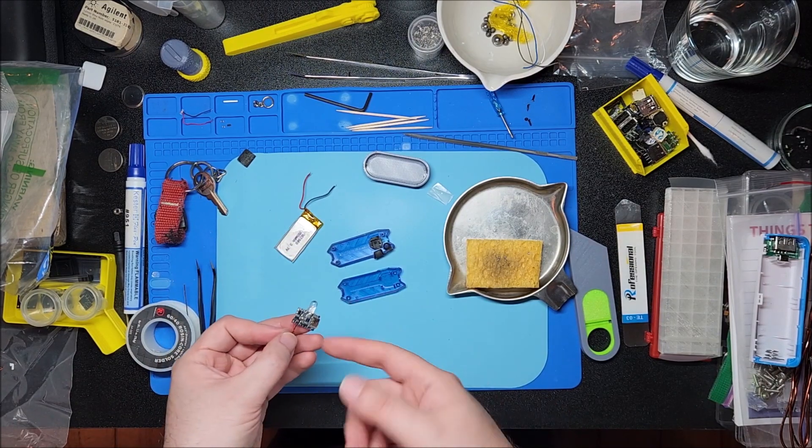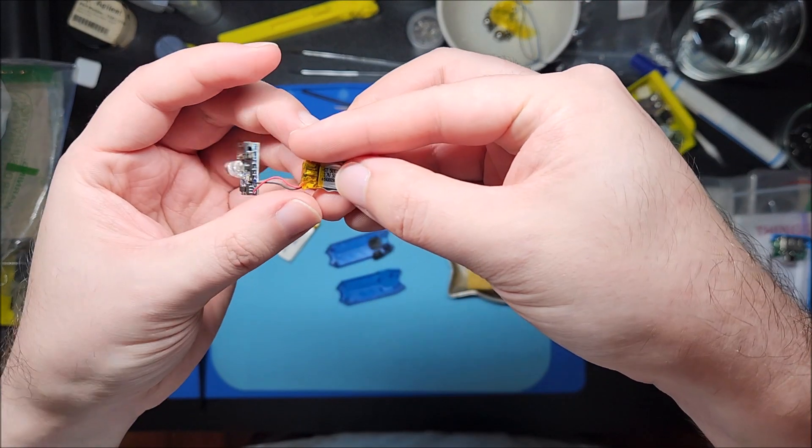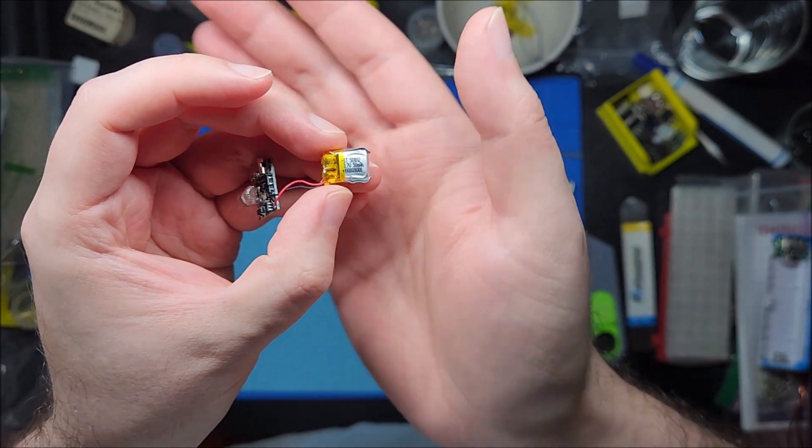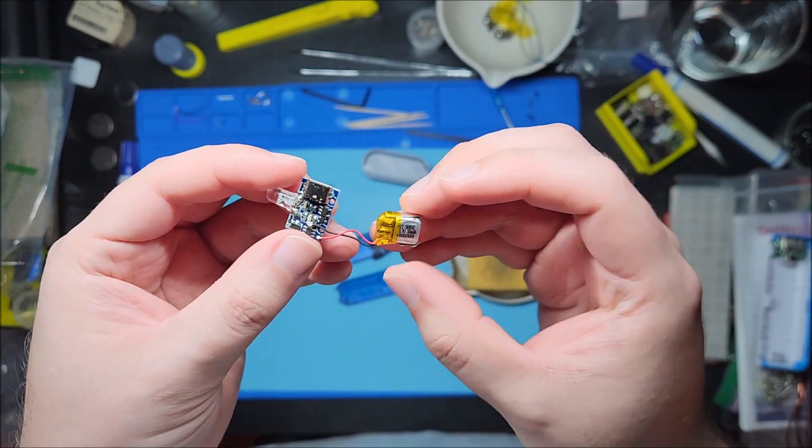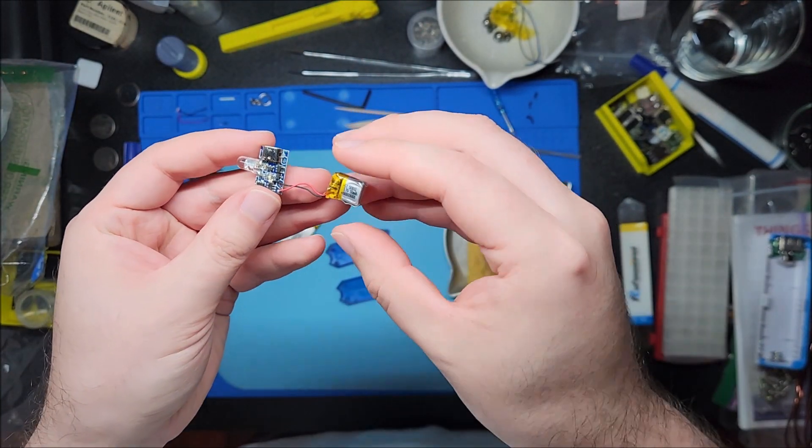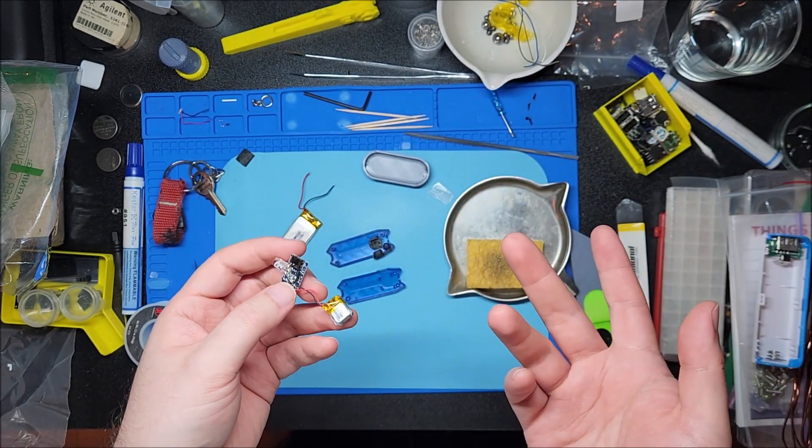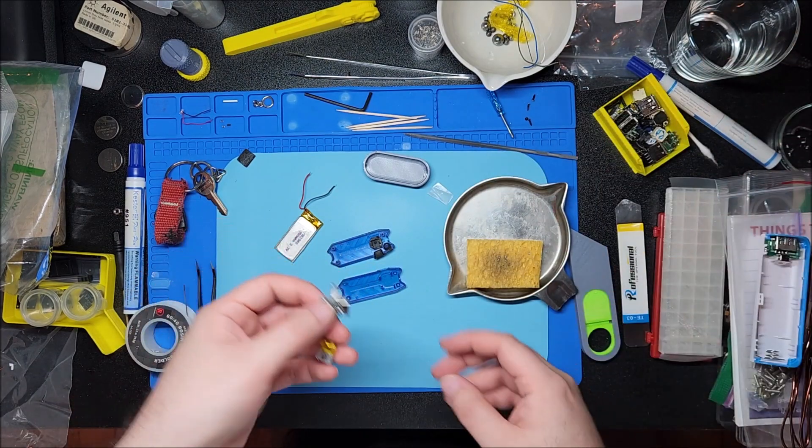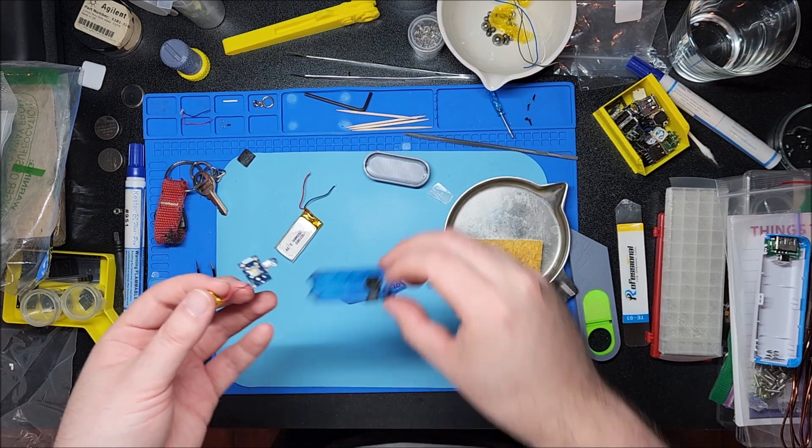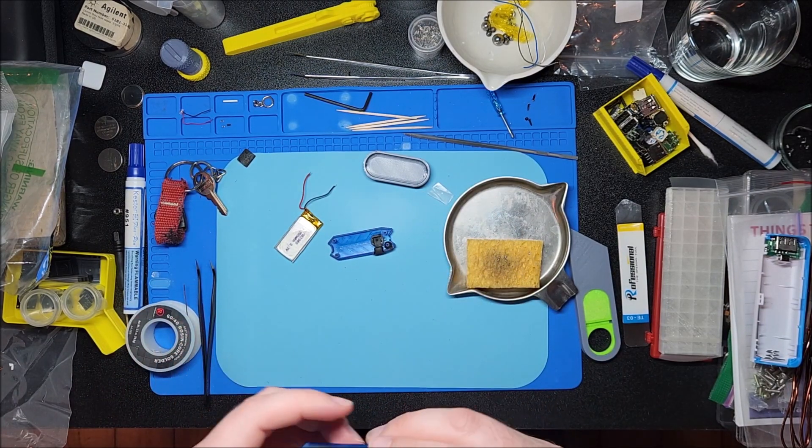I dug out an even smaller battery, this is from a pair of wireless earbuds, this is a 50 milliamp hour so it's tiny. It does work, I mean you can see it probably won't work for very long especially on the brightest mode but I almost never use it on the brightest mode. This should fit so I guess we're just gonna try to reassemble this and hope that this works out.